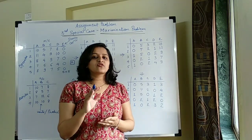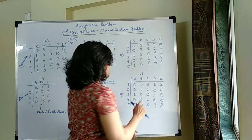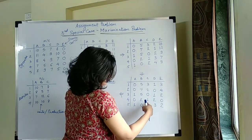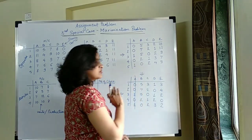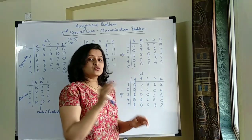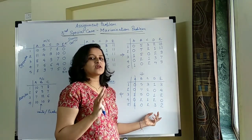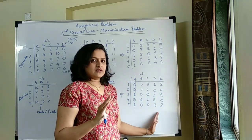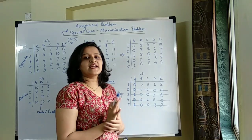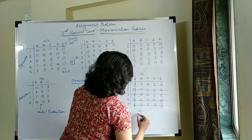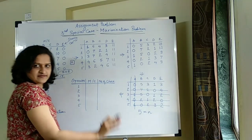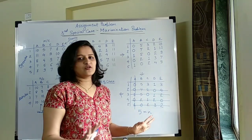Now draw the minimum number of lines to cover all zeros. In the first column three zeros are present, so cover that first. Going row-wise and column-wise, you are going to require a minimum of five lines to cover all the zeros. The number of lines required is 5, and n is also 5, since this is a 5 by 5 matrix. When the number of lines equals n, the solution is found.